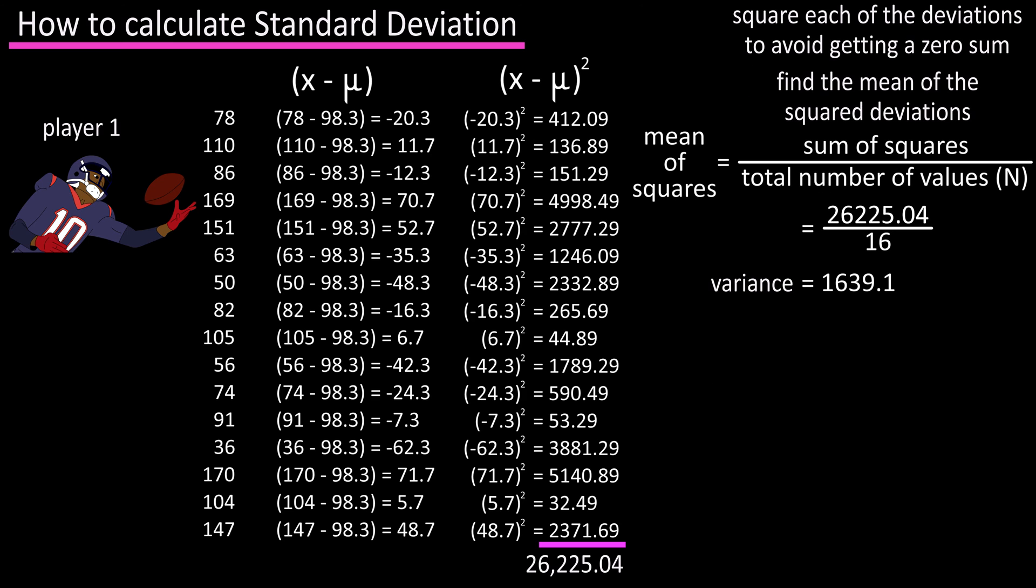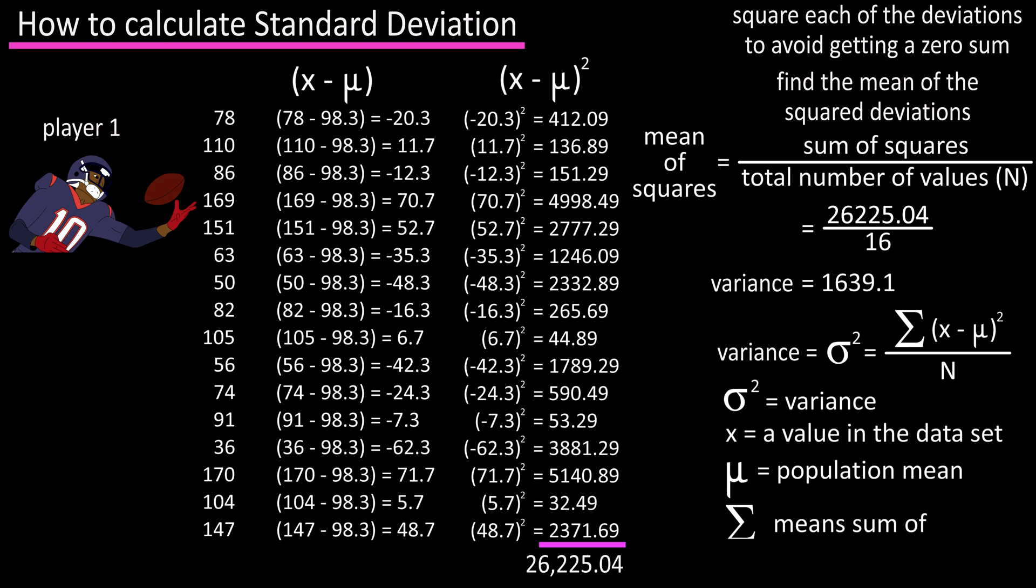The formula for this is written small sigma squared equals the sum of x minus mu squared divided by big n. Small sigma is a greek letter and small sigma squared means variance. X represents an individual value in the data set. Mu is the population mean of the data set and this is the greek capital letter sigma and it means sum of, and capital n is the total number of values in the data set.